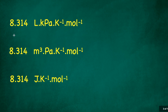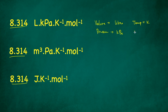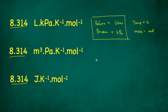The value R = 8.314 applies when volume is in liters and pressure is in kilopascals — with temperature in Kelvin and moles per mole as usual. So if volume is in liters and pressure is in kilopascals, you use 8.314.